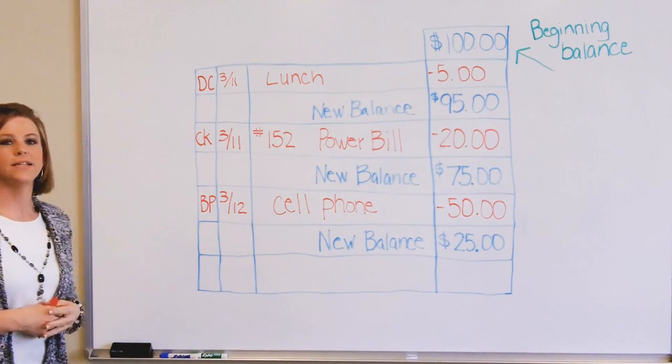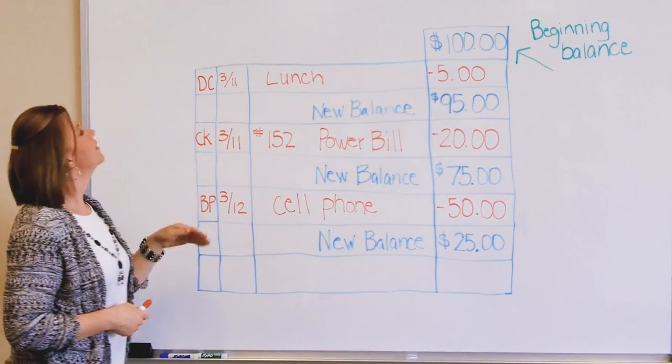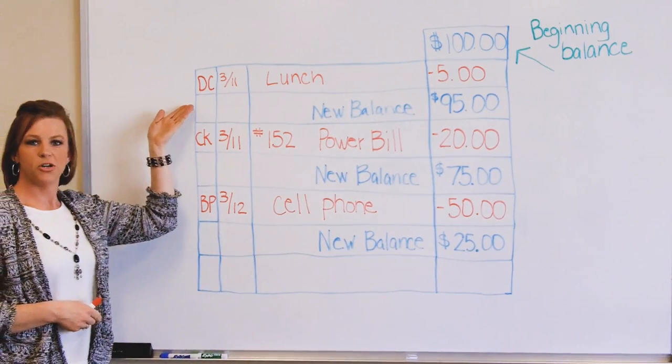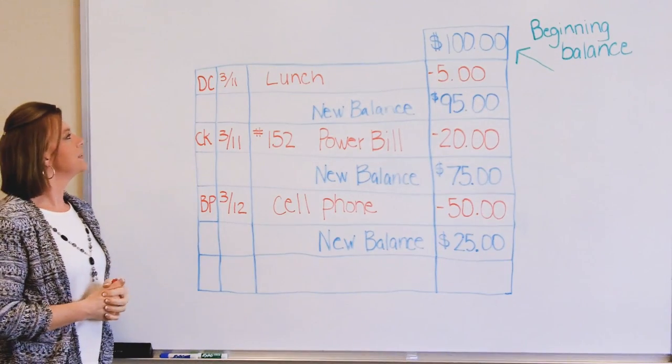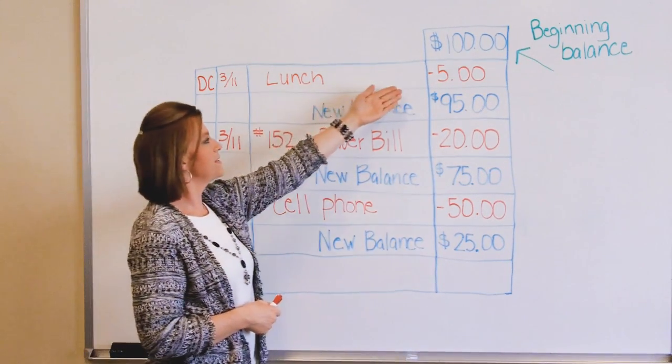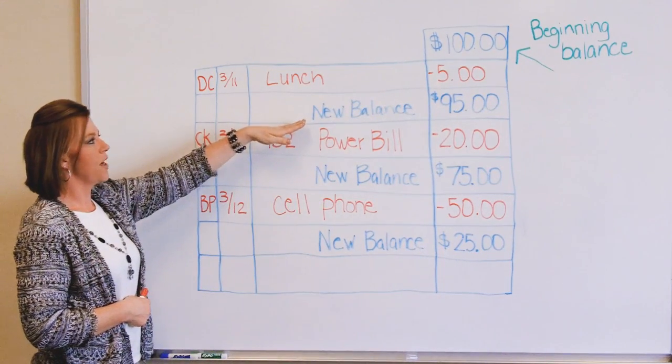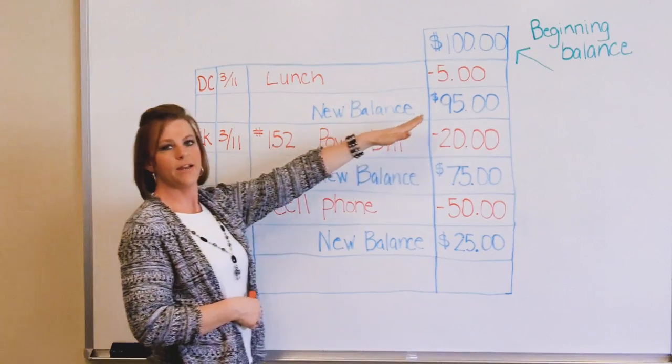Here we start out with a simple checkbook with our beginning balance of $100. We then have a debit card purchase. We have DC in here notating that. For lunch, we're going to minus out the $5, that then brings us to a new balance in this line of $95.